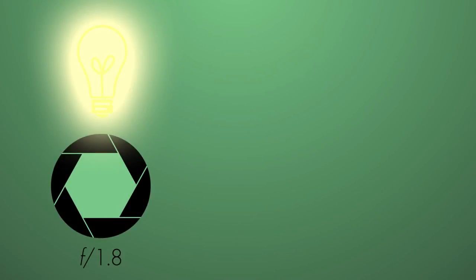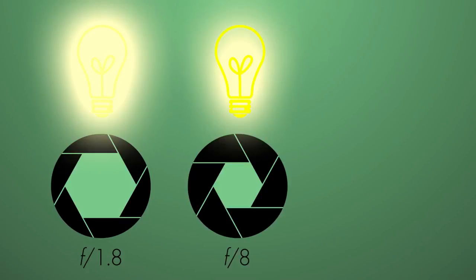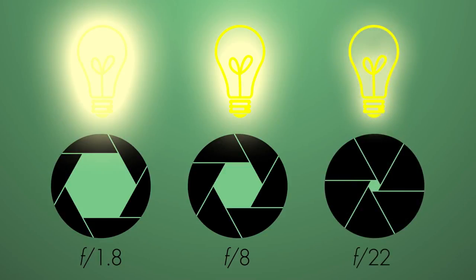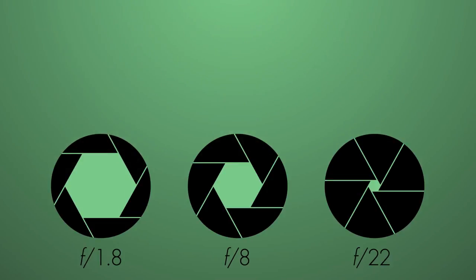An aperture of f/1.8 is a lower f-stop number and will allow more light through the lens. An aperture of f/8 is a middle range aperture that will allow less light through the lens. An aperture of f/22 is a higher f-stop number that allows the least amount of light through the lens in this example.